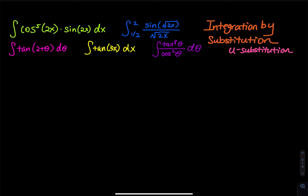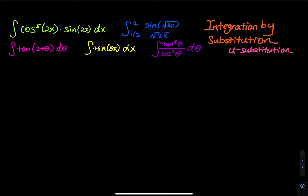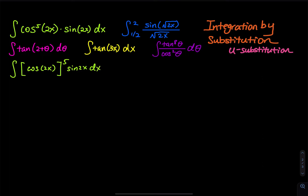The first problem is the integral of cosine fifth power of 2x — that is, you evaluate cosine of 2x first, raise the whole answer to the fifth power, then multiply by sine of 2x dx. I will write this as the integral with a square bracket, the fifth power applied to cosine of 2x, times sine of 2x, dx.